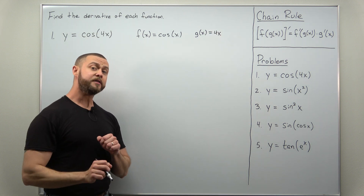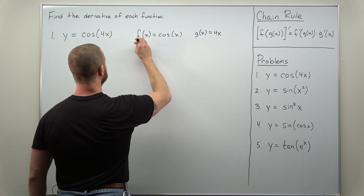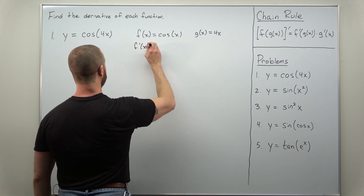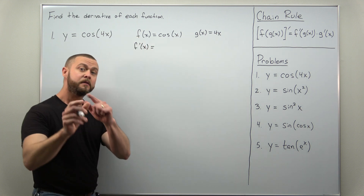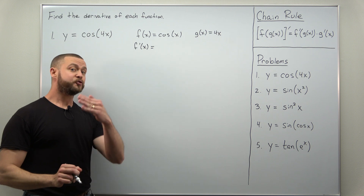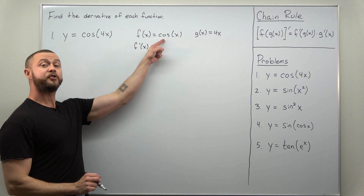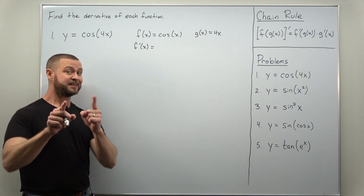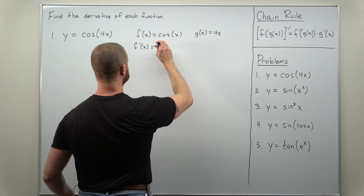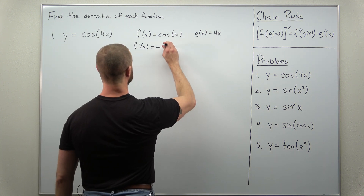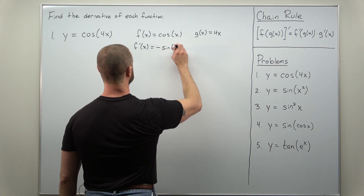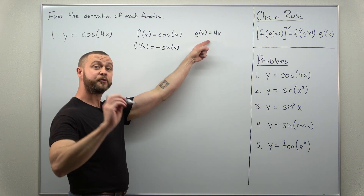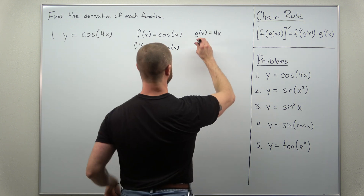We're going to calculate the individual derivatives. In calculating f prime, this is where your trig derivatives come in. The derivative of cosine of x is negative sine of x. And g prime is really simple — that comes out to 4.